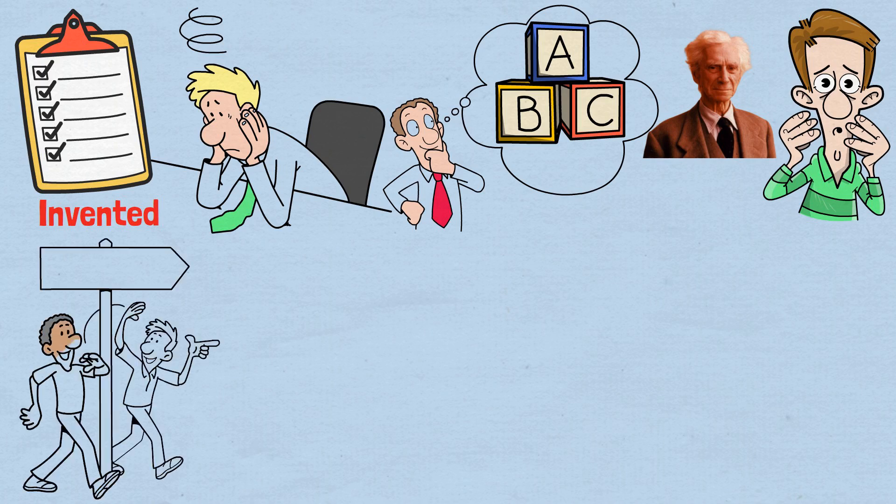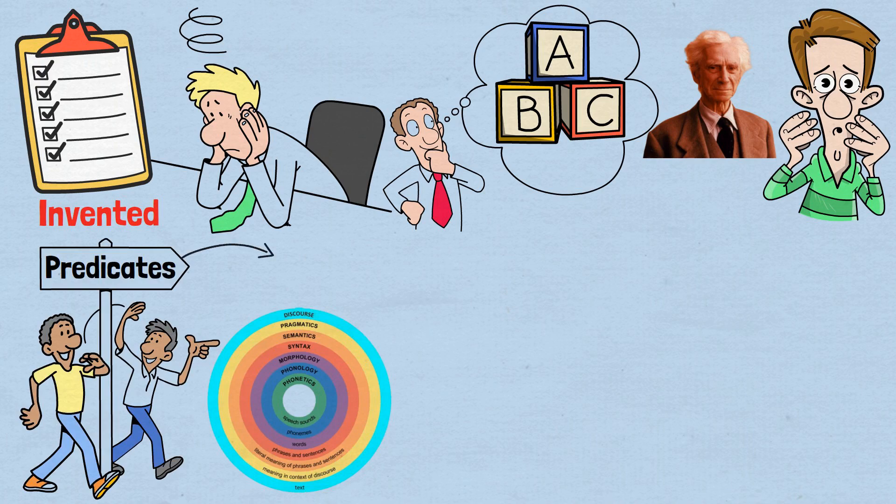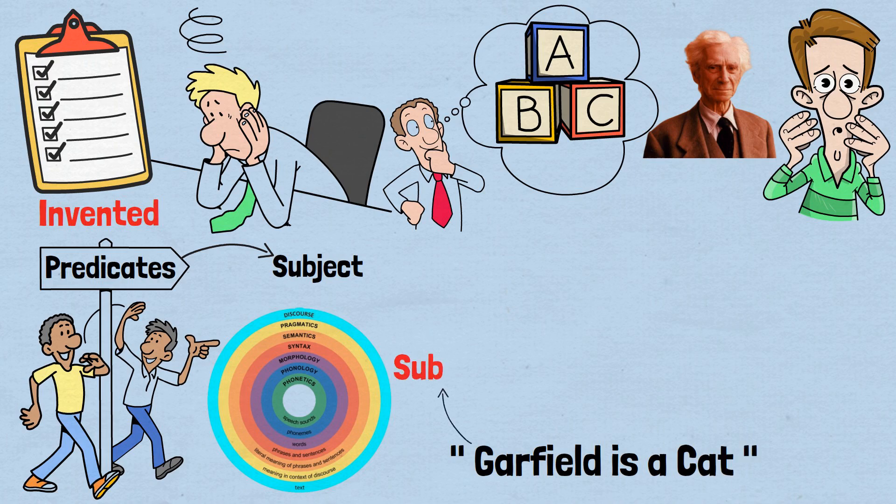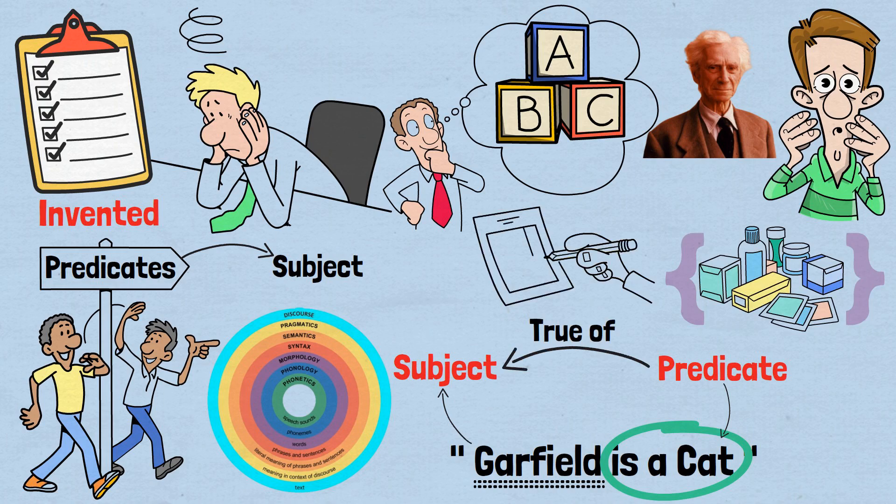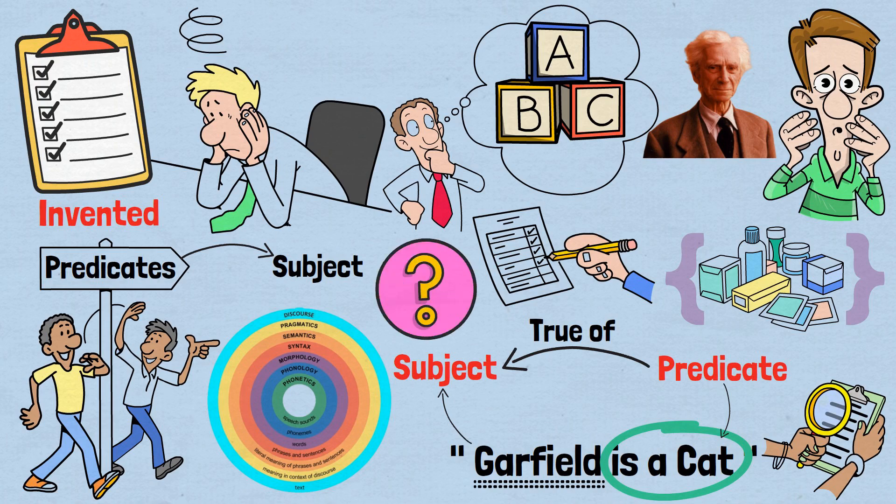Let's shift from talking about sets to talking about predicates. In linguistics, a predicate is simply what we say about a subject. In 'Garfield is a cat,' Garfield is the subject, and 'is a cat' is the predicate. We can say that the predicate 'is a cat' is true of Garfield. Just as sets contain objects, predicates are true of subjects. And just as we have rules for sets, we have corresponding rules for how predicates work in natural language.